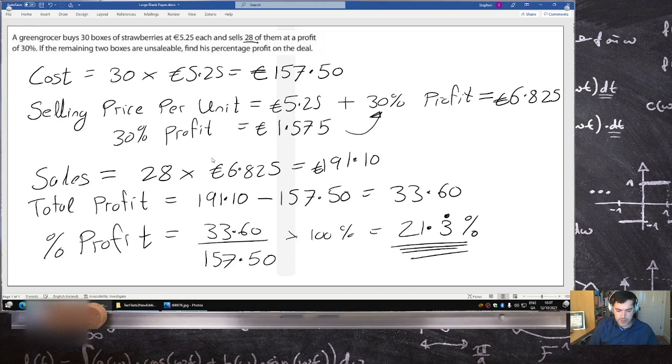And that is 21.3 recurring percent. So that's the answer here. 21.3 recurring. Okay. Thank you.